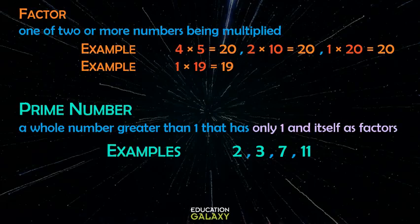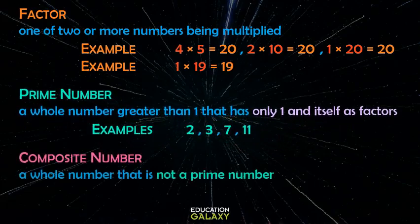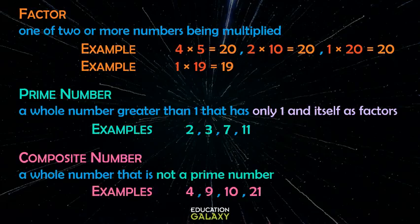Now, what do we call numbers that aren't prime numbers? They should have a cool name too, and they do, and it is composite. A composite number is a whole number that's not a prime number. That should be easy to remember. So we could think of many examples: 4, 9, 10, 21. I could go on and on.